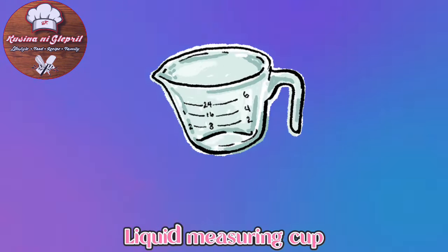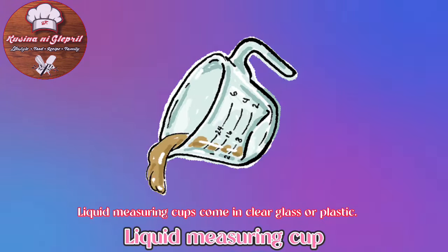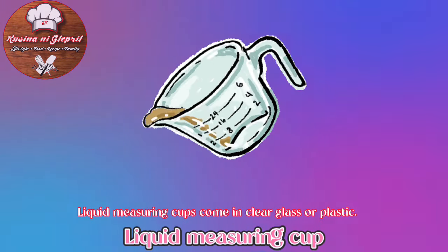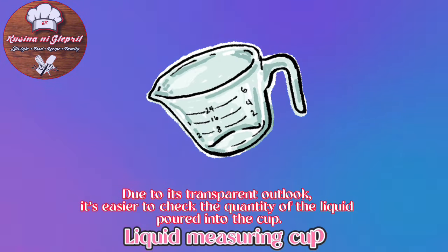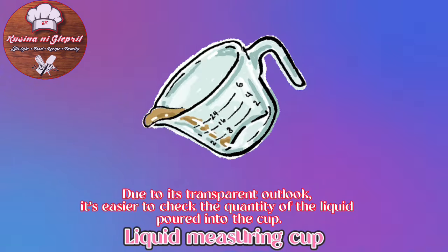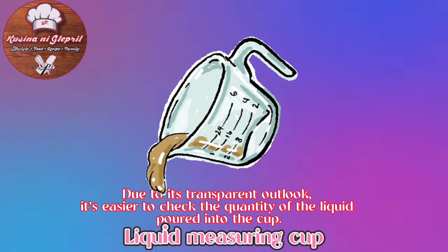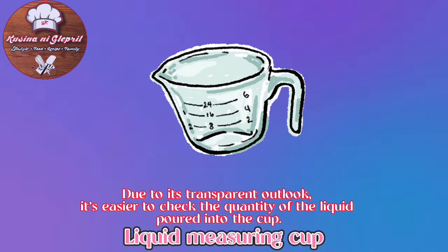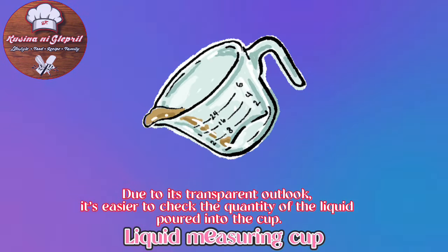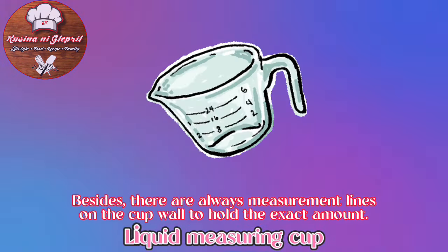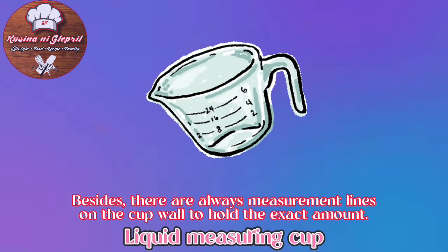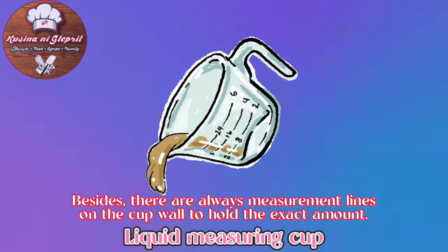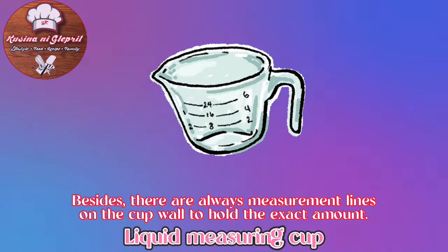Liquid Measuring Cup: Liquid measuring cups come in clear glass or plastic. Due to their transparent design, it's easier to check the quantity of liquid poured into the cup. There are always measurement lines on the cup wall to hold the exact amount.